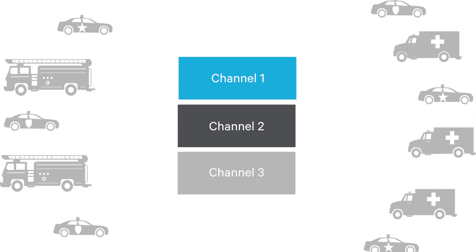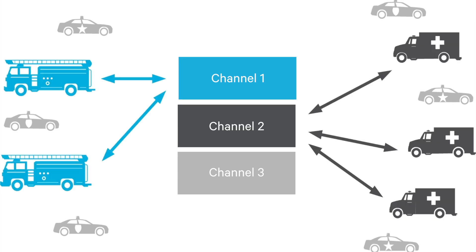Trunking has become important because it offers some huge advantages over conventional systems for larger agencies. A conventional system is one that has dedicated channels dedicated to a specific user or group of users. You select the channel manually by moving a selection knob on a radio, pressing some buttons, or using some kind of drop-down menu in a display. So conventional means selecting a channel in order to communicate, and channels are dedicated to particular users.